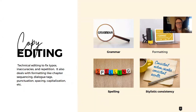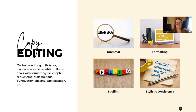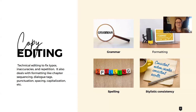Copy editing is more technical editing. We're fixing typos, inaccuracies, and repetition. It also deals with formatting your chapter sequencing — making sure it's consistently 1, 2, 3 or Chapter A, B, C, not mixing numerals and words. Your dialogue tags are appropriate, punctuation is correct, spacing is consistent after sentences, capitalization is correct, proper nouns are used, and grammar is appropriate. Are we indenting consistently throughout the whole book? You're making sure spelling is correct and there is stylistic consistency the whole way through the manuscript.